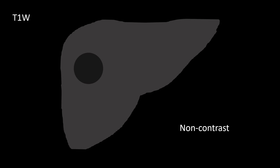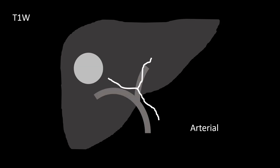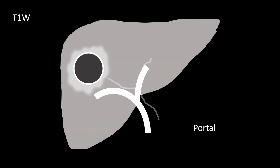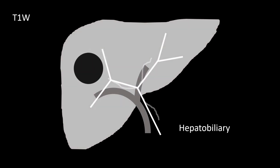At the level of progressed HCC, the nodule is hypointense on non-contrast imaging, shows arterial phase hyperenhancement on arterial phase T1, demonstrates washout and capsule enhancement with or without a rim on portal phase, and shows no gadoxetate uptake — appearing as a hypointense nodule on the hepatobiliary phase.